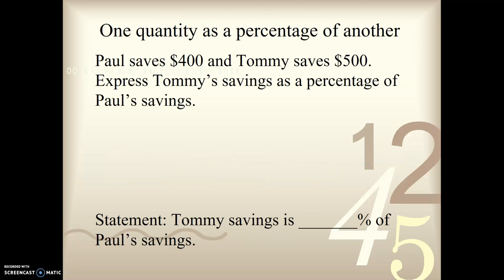Let's try a few more problems here. Paul saves $400 and Tommy saves $500. Express Tommy's savings as a percentage of Paul's savings. So now we have an is or as over of. So let's do some boxing and underlining here. So Tommy's savings as, I'm going to box that, that's my as, a percentage of Paul's savings. So I'm going to put Tommy on the top and Paul on the bottom.